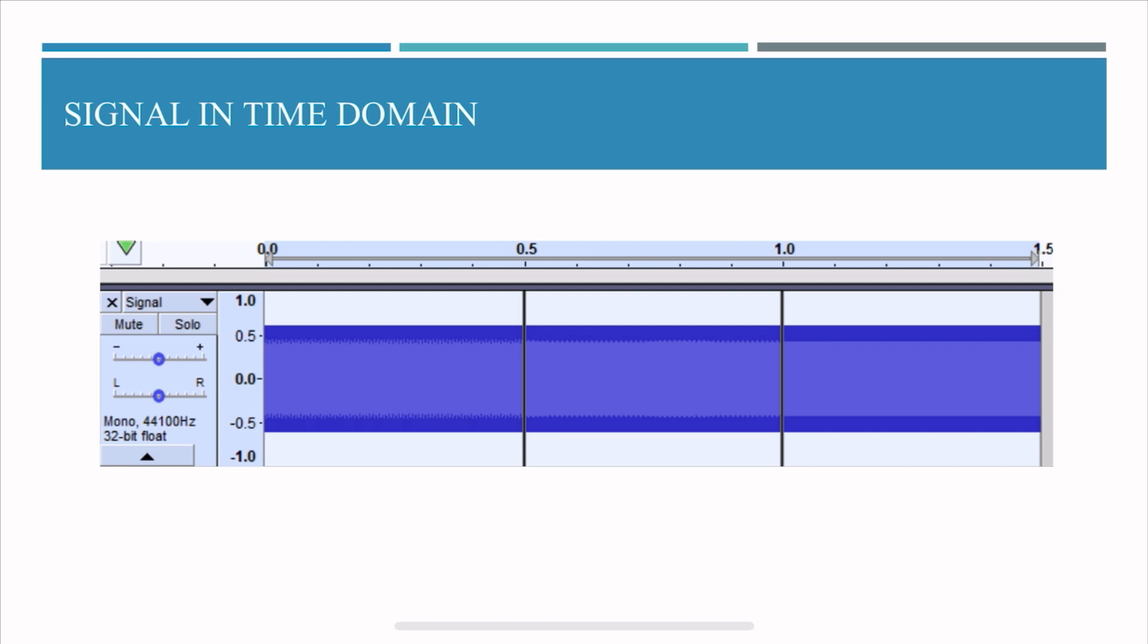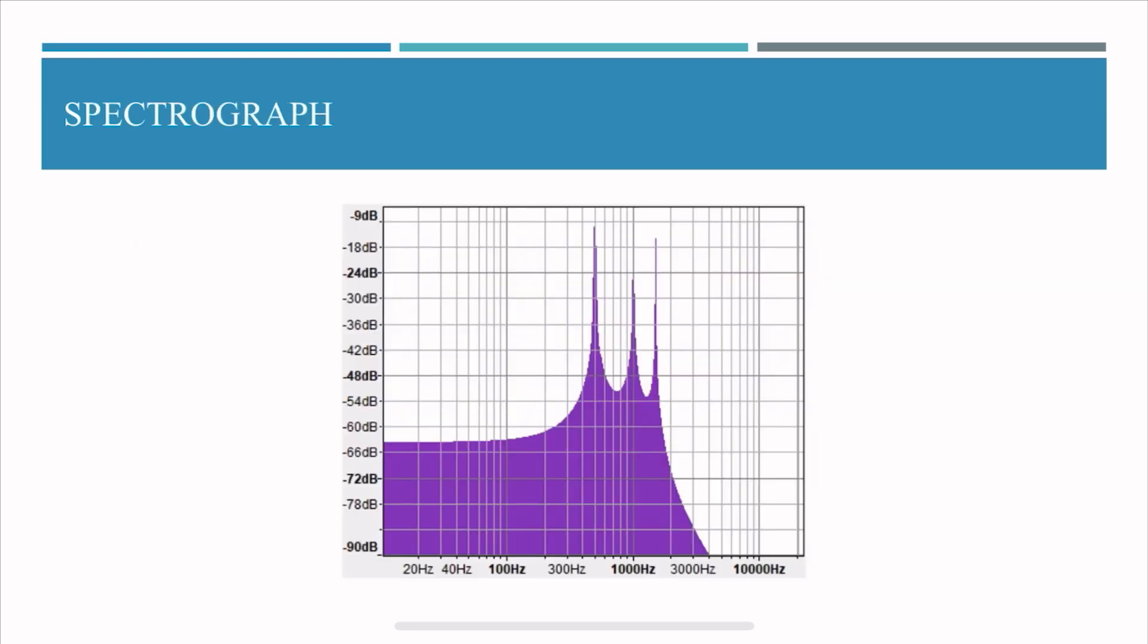If you take a spectrograph or a 2D plot, you're gonna get what frequencies are present and what are their amplitudes. So this graph is good but it's not good enough because it doesn't tell at what instance of time was one kilohertz present.